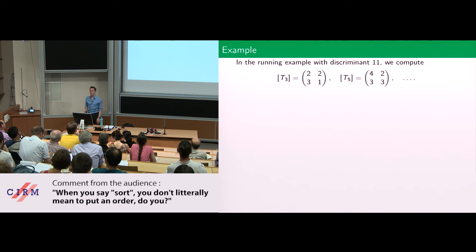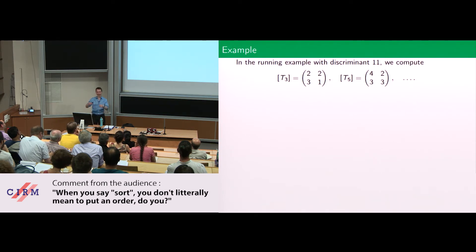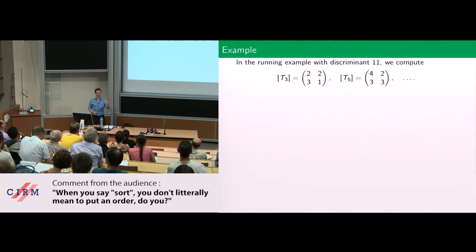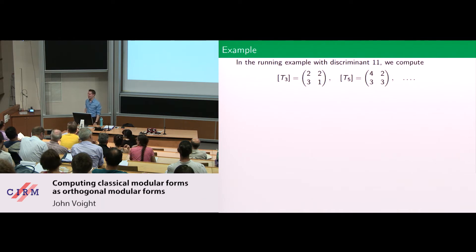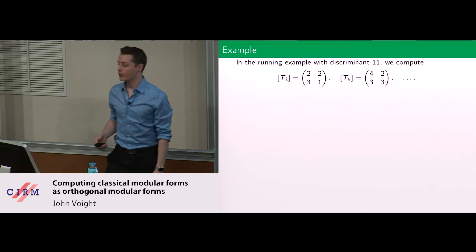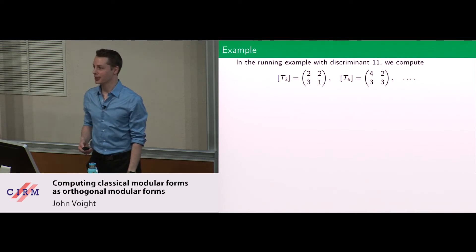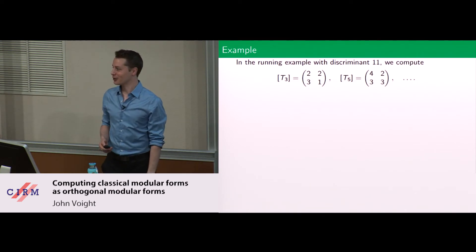When you say sort, you're not literally defining an ordering — you just want to partition them. They came to me in an order and I said 'you go over here' — like the sorting hat in Harry Potter. There's an obvious eigenfunction called (1, 1), corresponding to constant functions. What is their eigenvalue? The answer is p+1 — the constant function just counts the number of neighbors. We call this an Eisenstein series for obvious reasons.